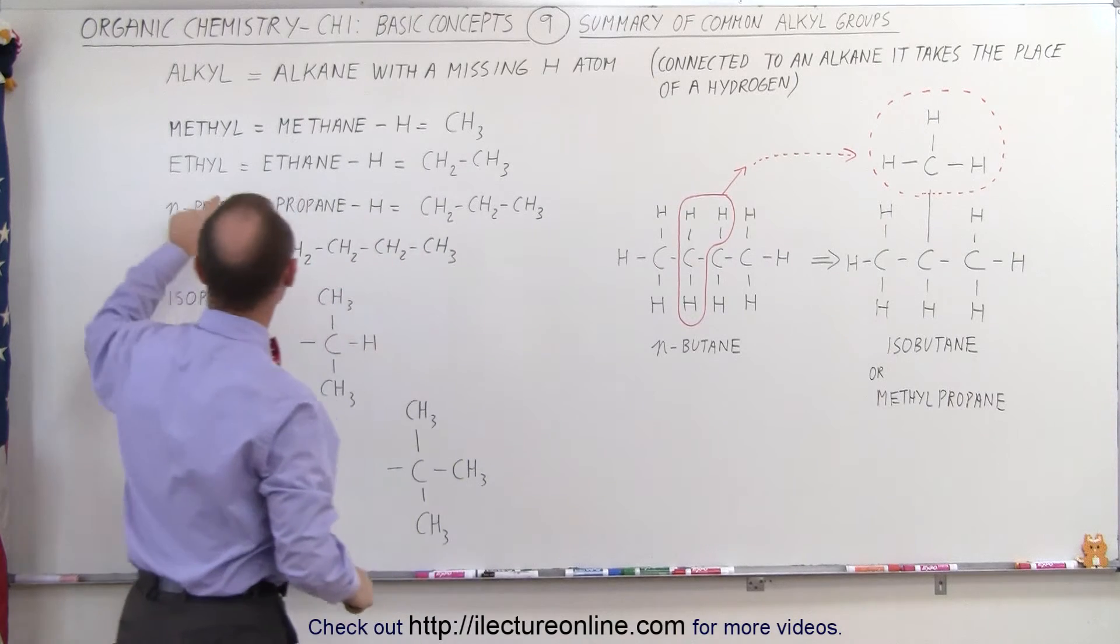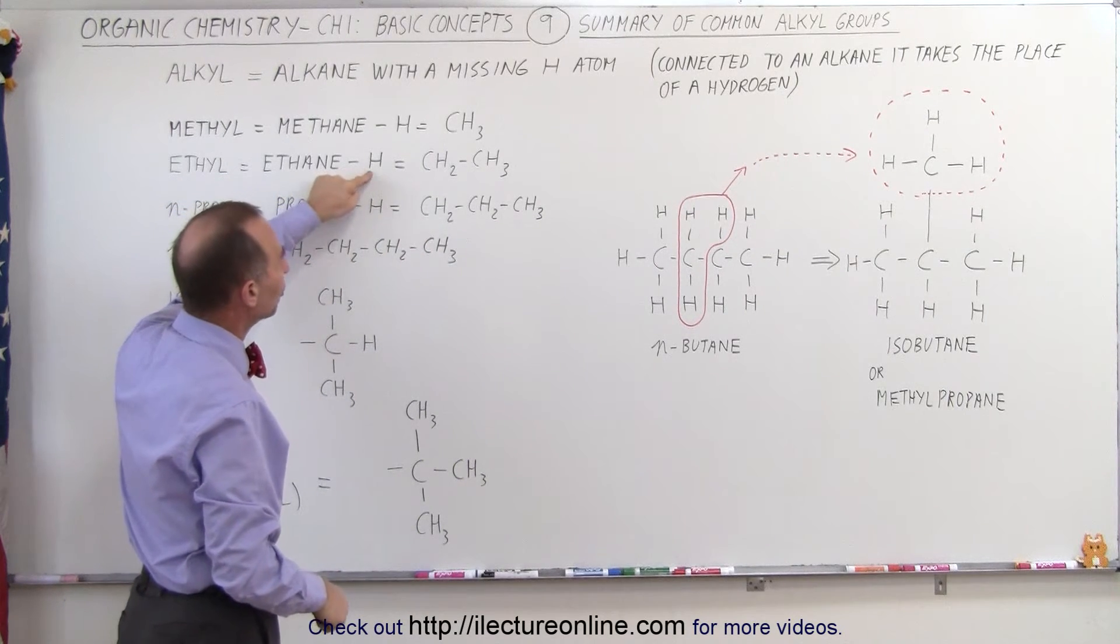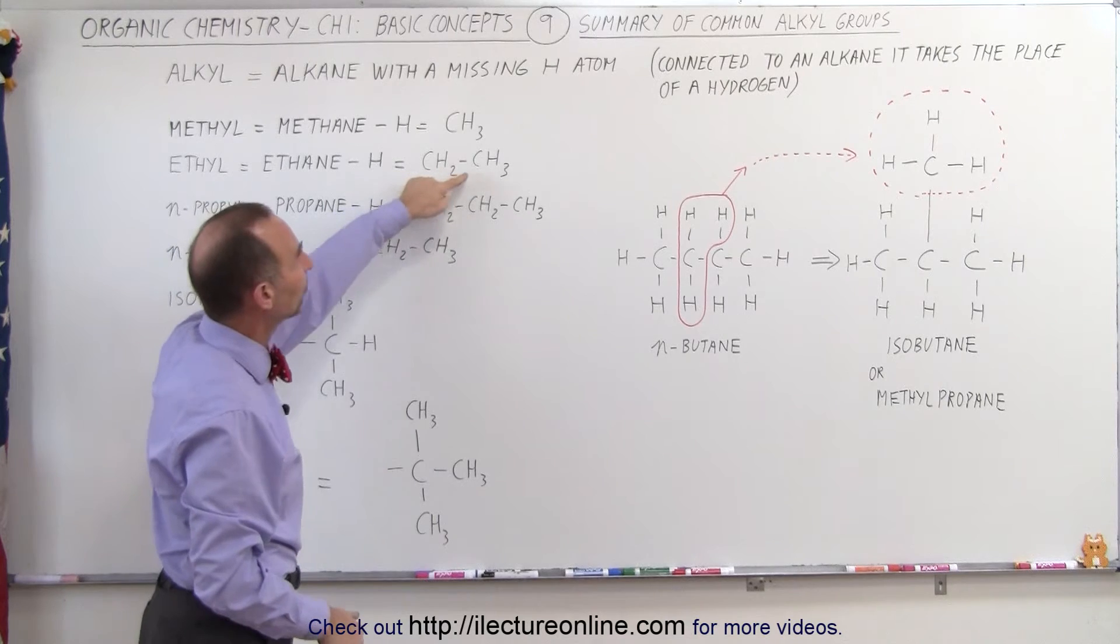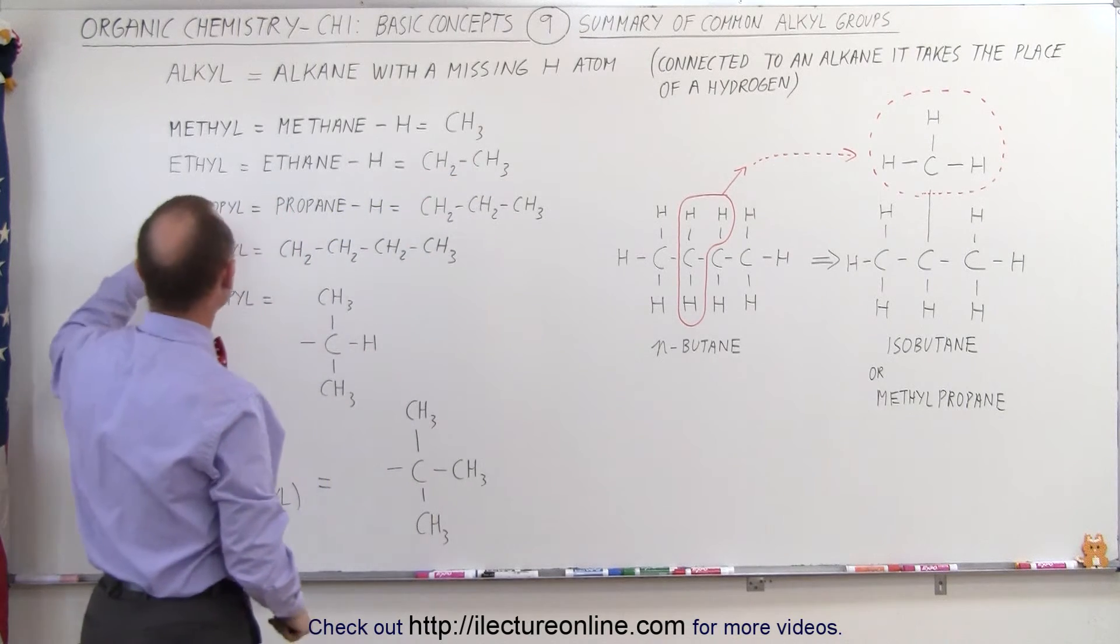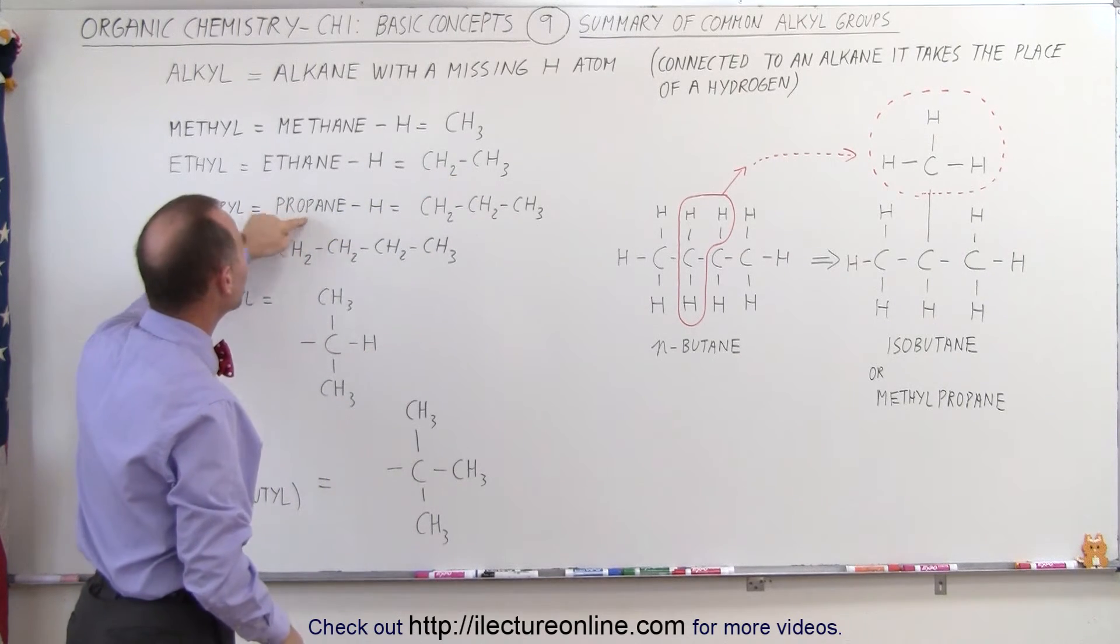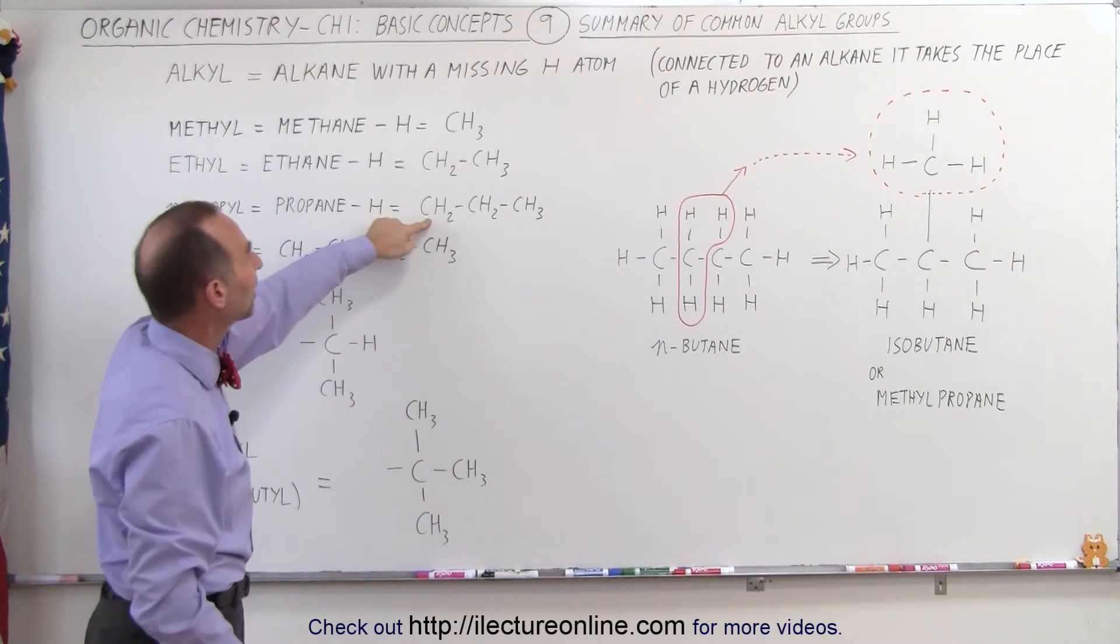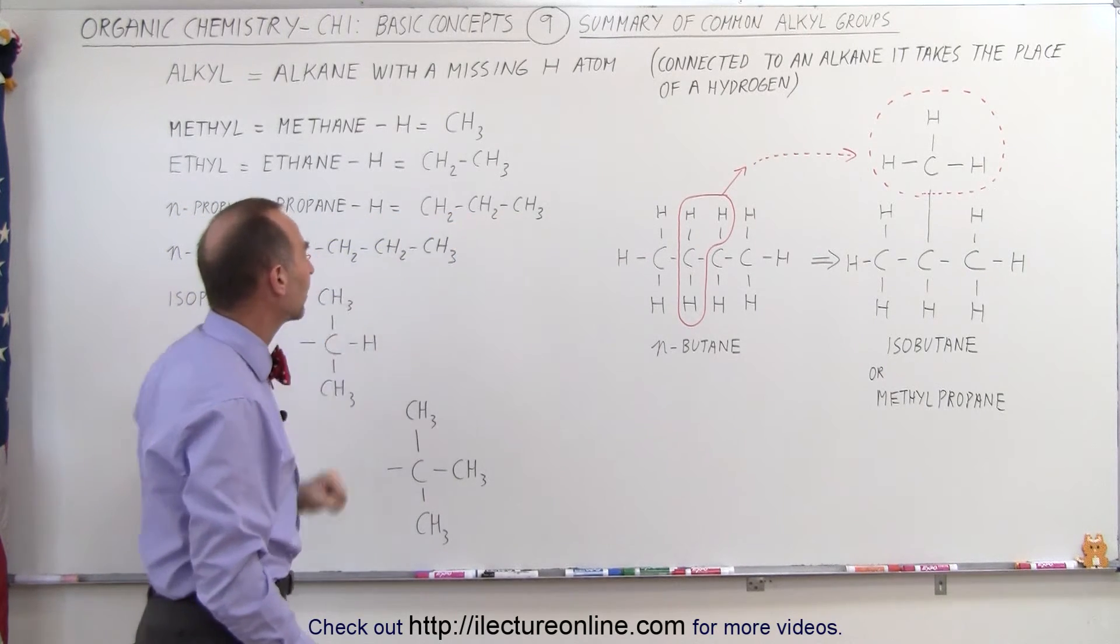Then we have ethyl, which is ethane minus a single hydrogen, which is a CH2 and a CH3. We have an n-propyl, which is propane minus a single hydrogen, which is CH2, CH2, CH3, chained together.